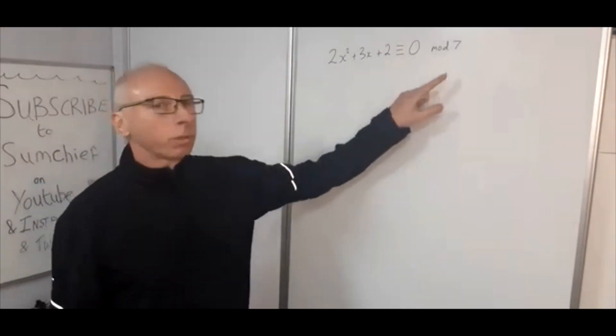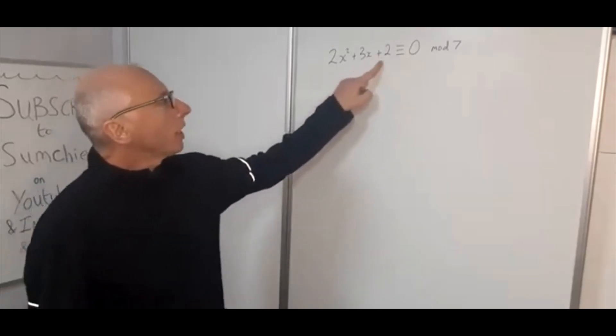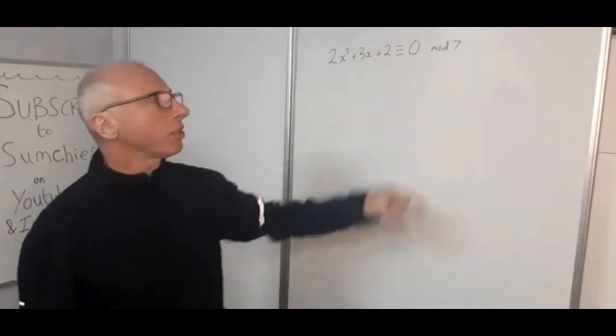Ok, so we are going to try and solve this quadratic congruence here: 2x² + 3x + 2 is congruent with 0 modulus 7.